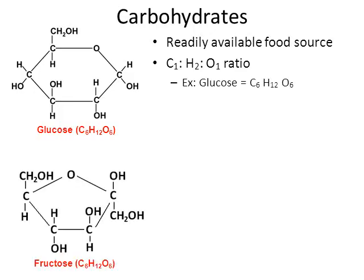Here's another example: fructose. It also has the formula C6H12O6, the same as glucose, but the atoms are arranged in a different configuration. Molecules with the exact same chemical formula but different arrangements are called isomers. Both glucose and fructose have a one-to-two-to-one ratio of carbon, hydrogen, and oxygen.